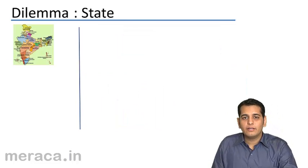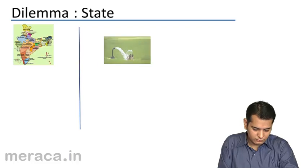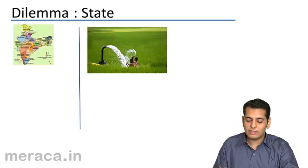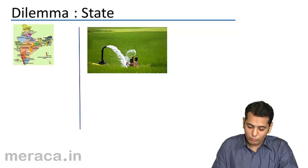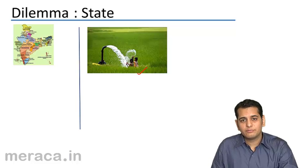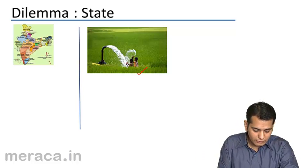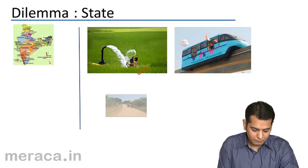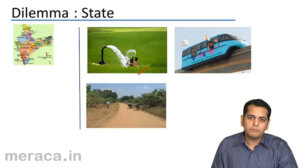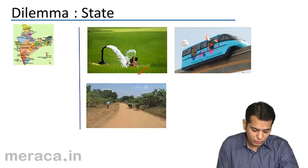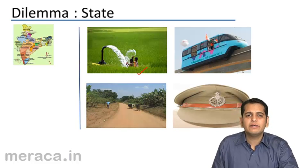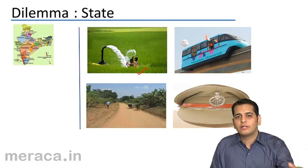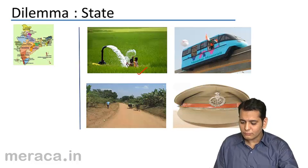Now let's take a look at economics surrounding a state. How does a state get affected by economics? Like a family and like an individual, a state also has many expenses to deal with. It may want to provide irrigation facilities and infrastructure for agriculture. It may also want to build a good transport system, give its people good roads to travel, or expand on various services like police services, traffic police services, or the bureaucrats and government officials that serve its people.